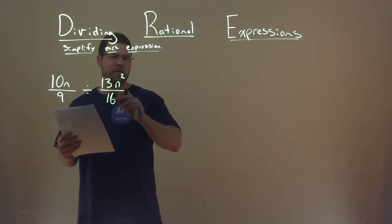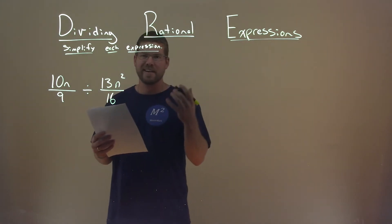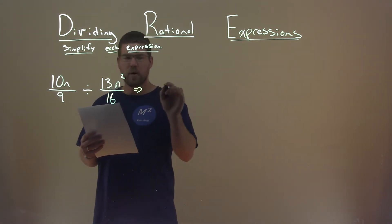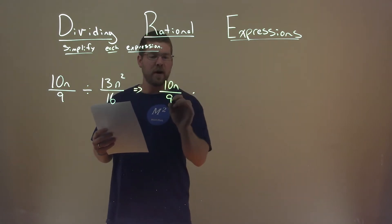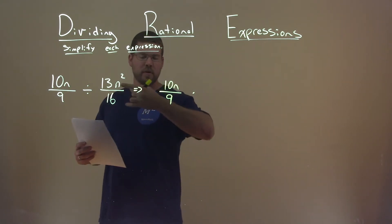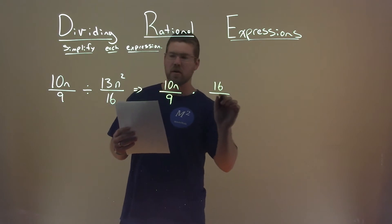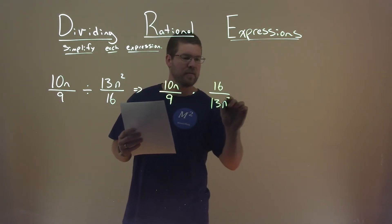Well, we know dividing a fraction is the same as multiplying its reciprocal. So I'm going to rewrite this: 10n over 9, but instead of dividing, I'm going to multiply it and flip it. We have 16 over 13n squared here.